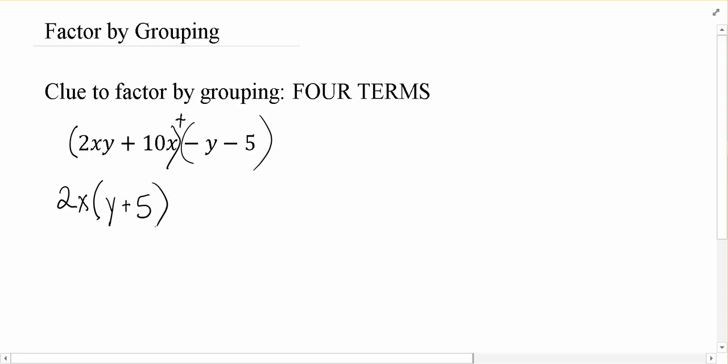Now, from the second term, I've got negative y and negative 5. And I want to look at those guys and say, what can I factor out of a negative y and a negative 5? Now, on first glance, I don't have anything in common. But we can always pull out a 1 or else pull out a negative 1.